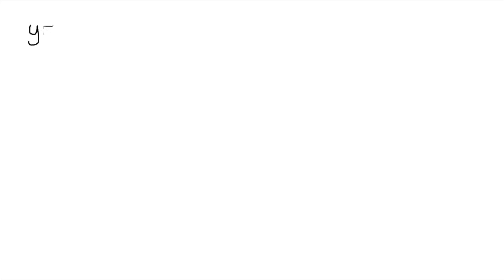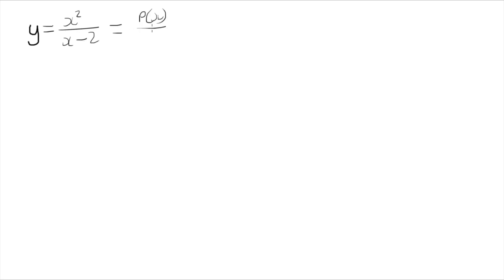In this video I'm looking at graphing the function y equals x squared divided by x minus 2. This is a rational function because it's the ratio between two functions, x squared and x minus 2. So that we can refer to each part of our function, I'm going to write them as p of x and q of x.